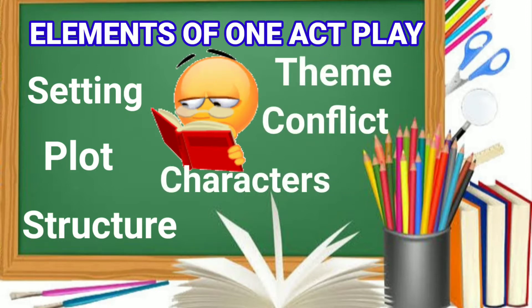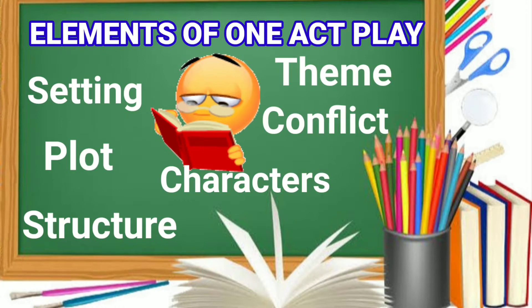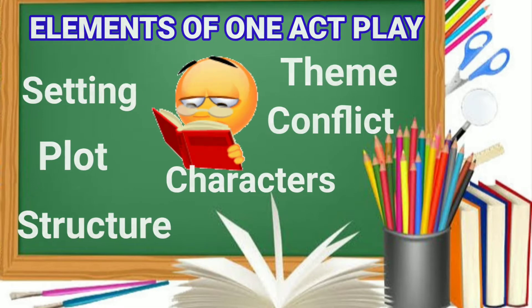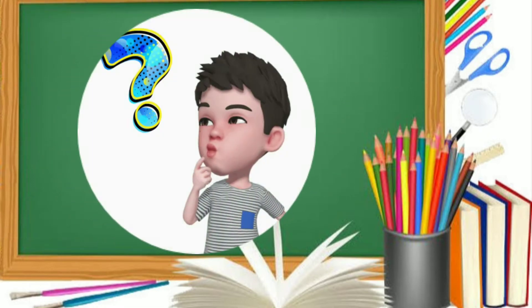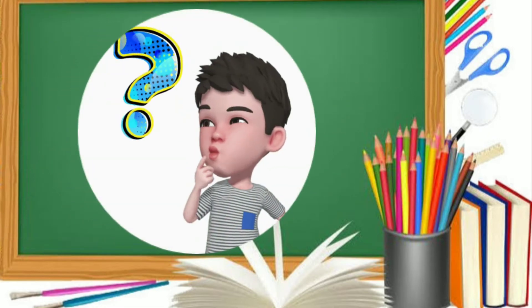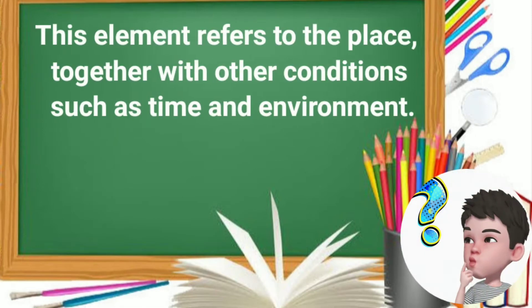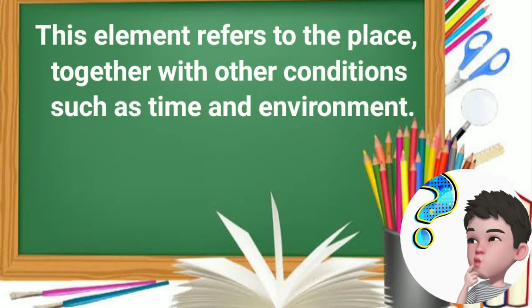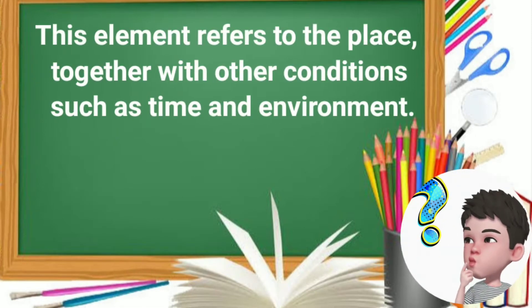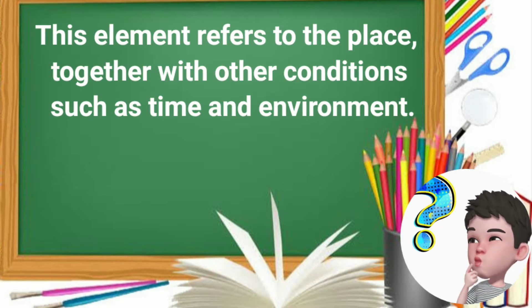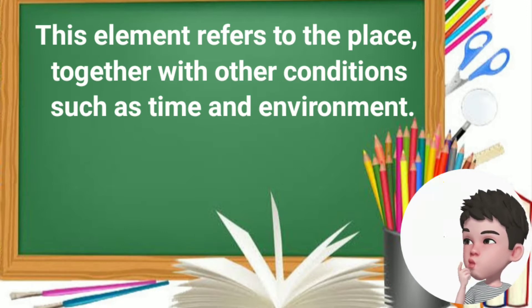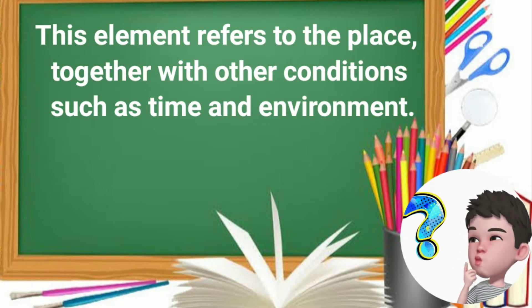You are already familiar with these terms because you already encountered them in your previous grade levels. Let's find out if you can identify each element. This element refers to the place, together with other conditions such as time and the environment — it is where the events occur.